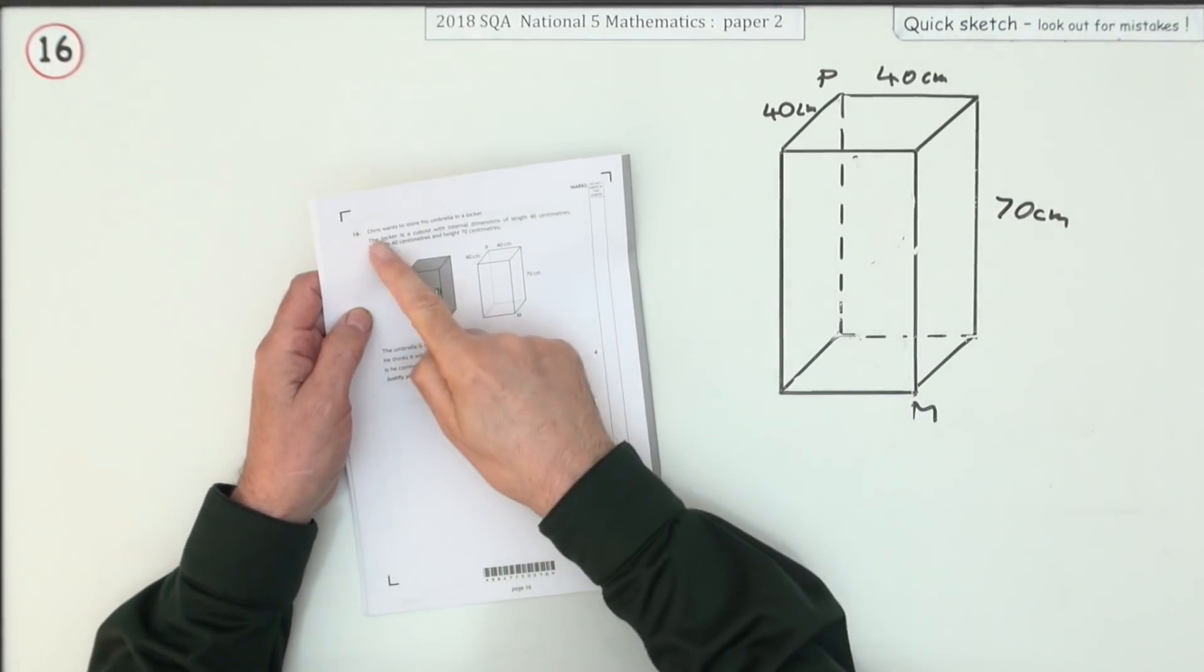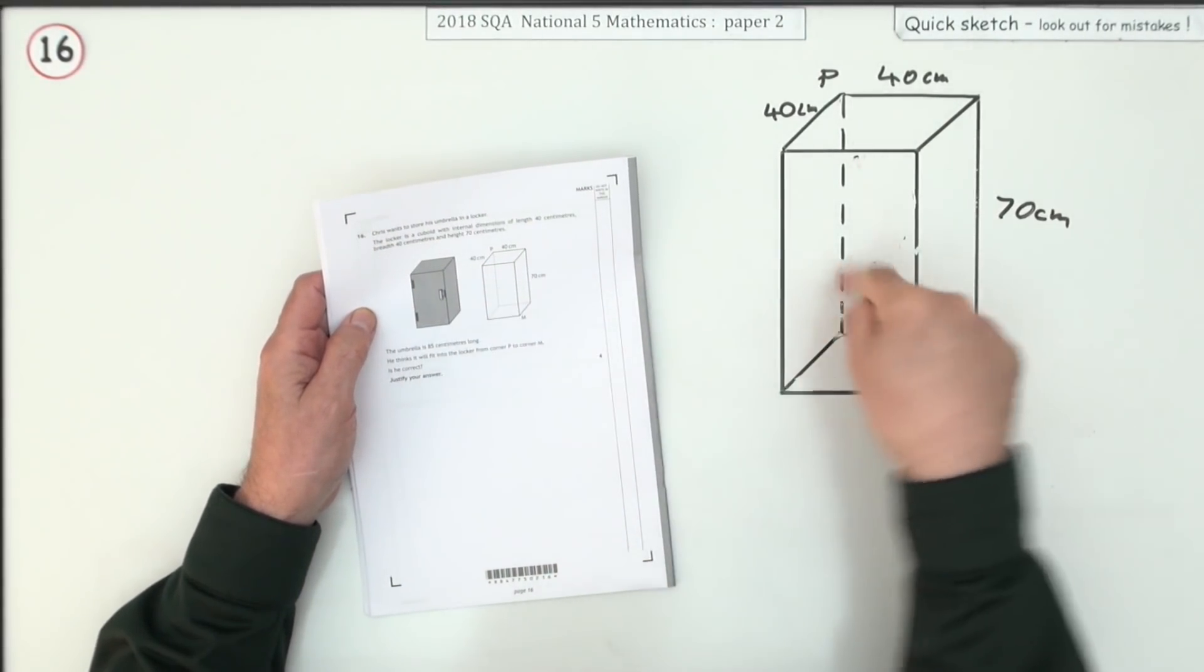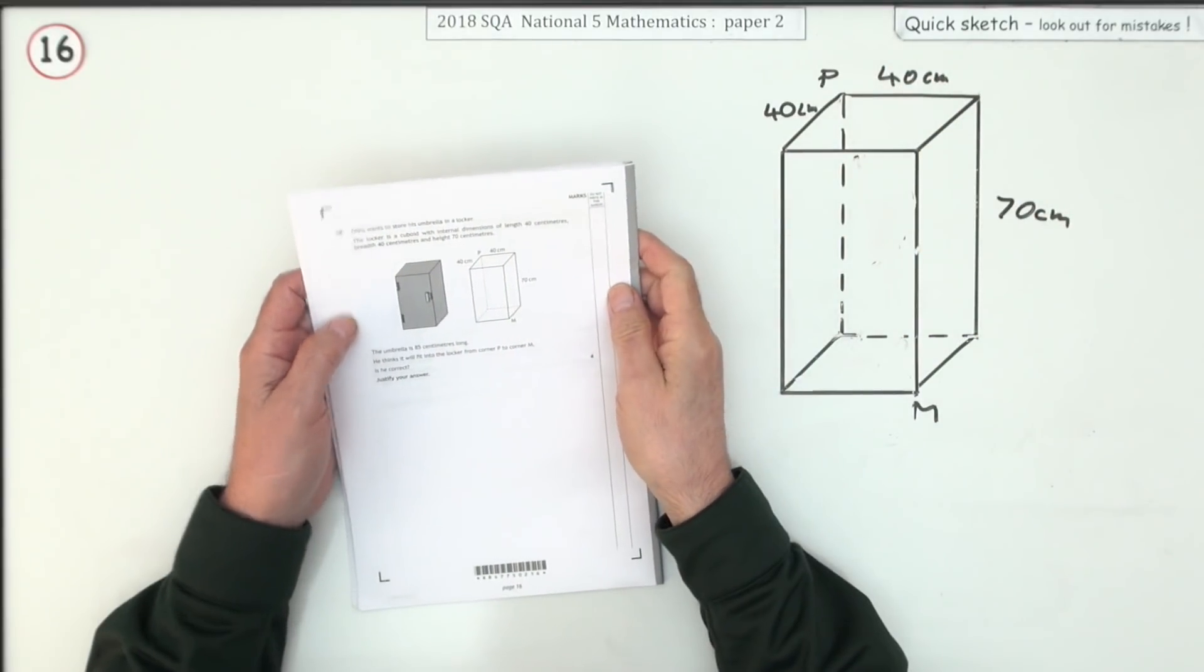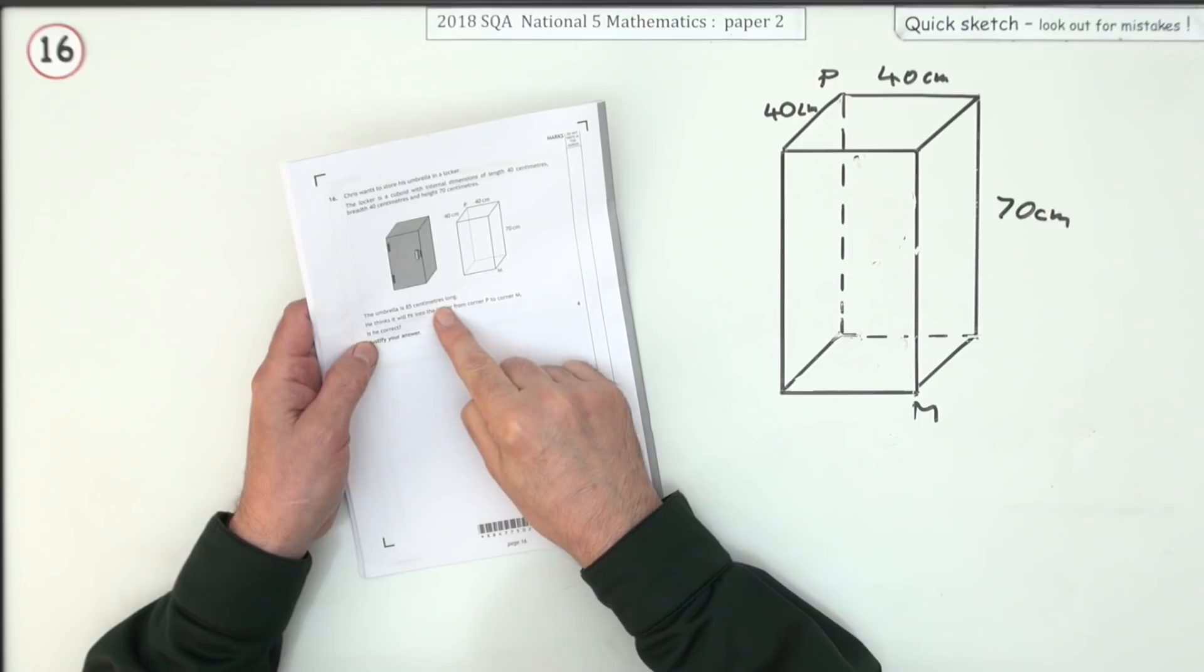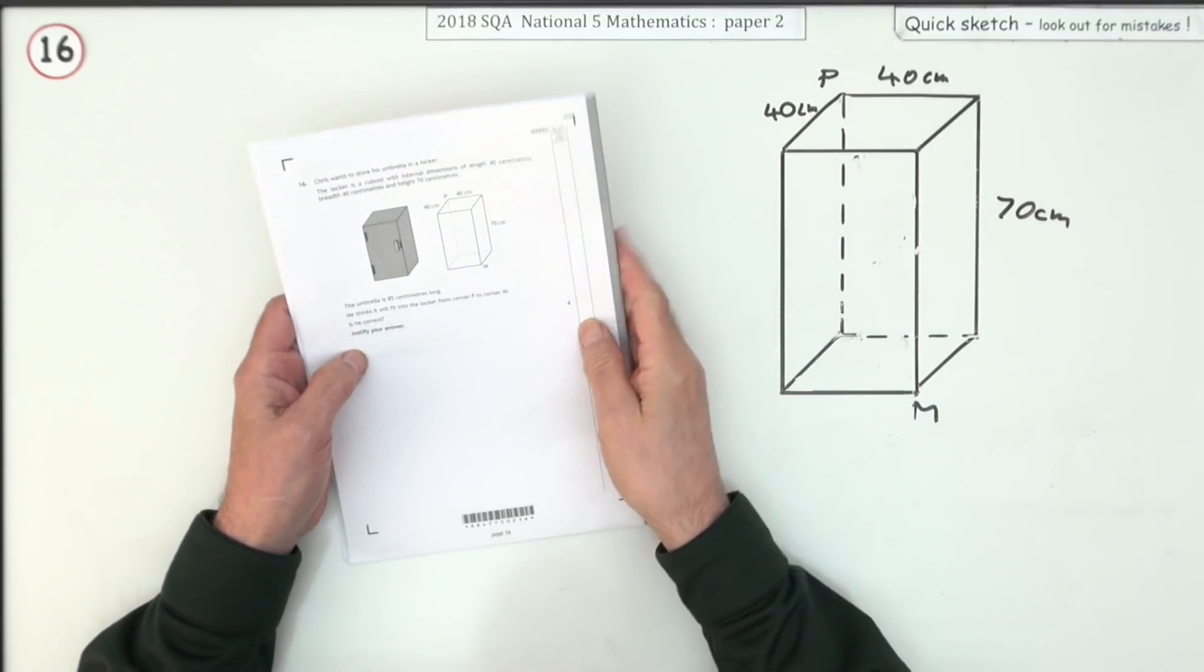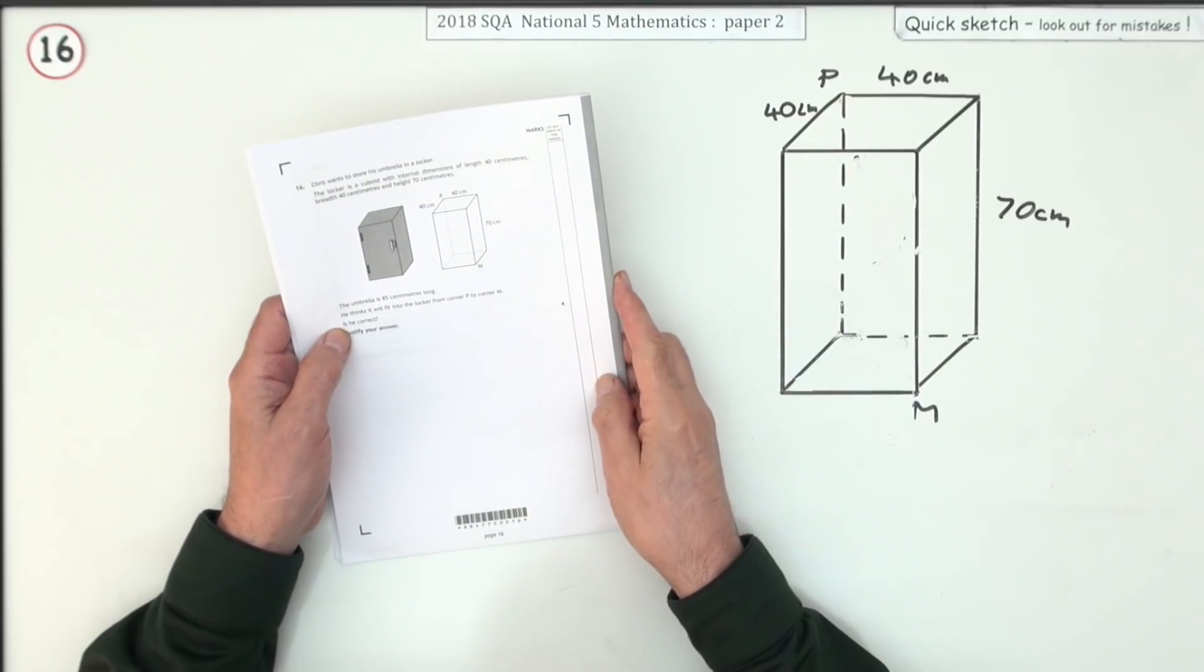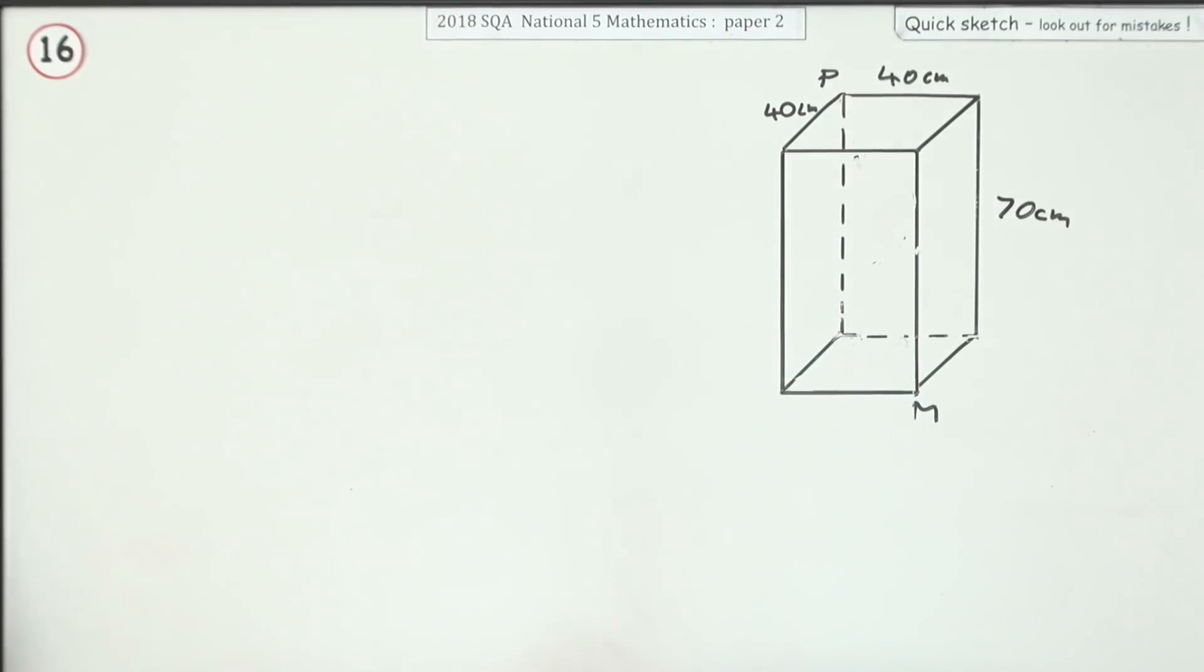Number 16: Chris wants to store his umbrella in a locker. Here's this locker—it's 40 by 40 by 70 centimeters tall. His umbrella is 85 centimeters long, so it's obviously too tall. He thinks it'll fit into the locker from corner P to corner M. Is he correct? Justify your answer.